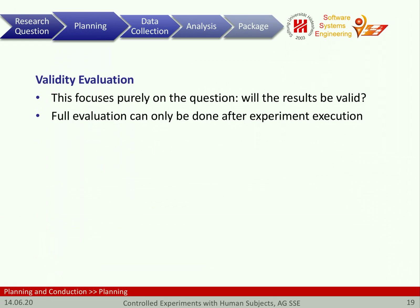The next step is so-called validity evaluation. The idea is to predict the validity of the outcome before we even run the experiments — to answer: once we run the experiment, will the results be valid? A full evaluation can only be done after execution, but the more problems we identify and resolve up front, the better. So we repeatedly try-run the experiment in our heads to predict any validity problems early on.